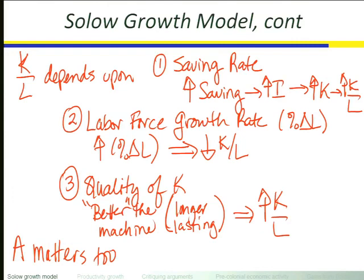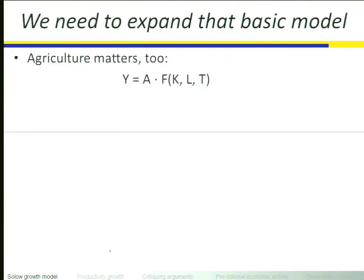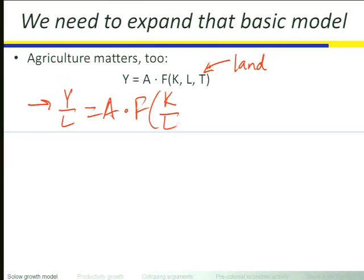This is all based on the Solow model — the way Bob Solow presented it, with two inputs: capital and labor. Two inputs makes sense for describing a post-World War II world, but we're going to start our story 14,000 years ago, so we need inputs beyond just capital and labor. We need to incorporate land as well — we use T to stand for land, T as in terra. With our assumption about constant returns to scale, output per worker is some constant A times some function of the capital-labor ratio and the land-to-labor ratio.